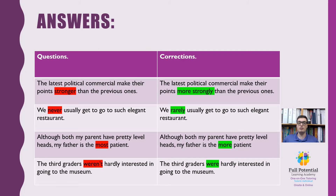Here are the corrections from the previous questions. In the first sentence, 'stronger' must be changed to 'more strongly' to have the proper comparative form. In the next sentence, the adjective 'never' must change to the adverb 'rarely' since the use of 'never' is illogical. In the third sentence, 'most' must change to 'more' since 'more' is used to compare two entities and we are comparing one of two parents. Finally, 'weren't' must change to 'were' to correct for the double negative in the final sentence.